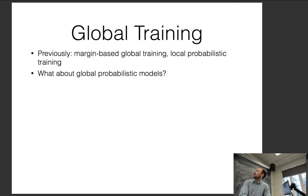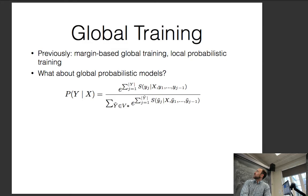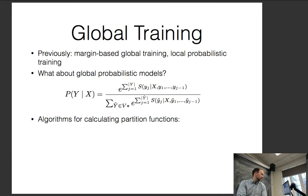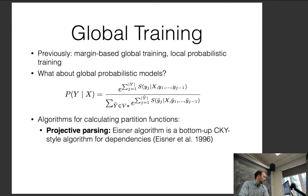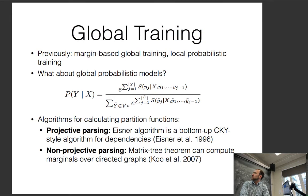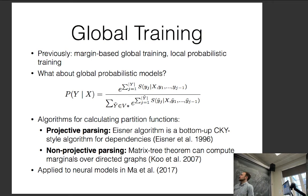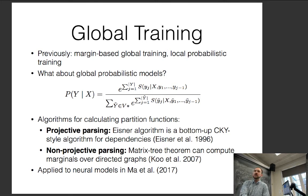Previously, margin-based global training was used. For global probabilistic models in neural nets for graph-based dependency parsing, there are algorithms for calculating partition functions automatically using dynamic programming. The Eisner algorithm can do this. For non-projective parsing, there's also the matrix tree theorem that can compute marginals over directed graphs, and this has been applied to neural models at CMU. The general theme is that many inference algorithms are completely independent of whether you're using a neural network or not.